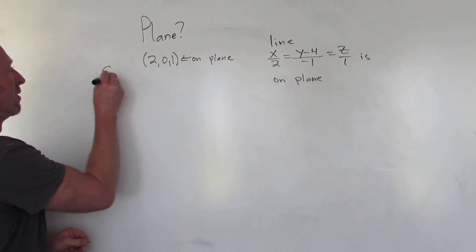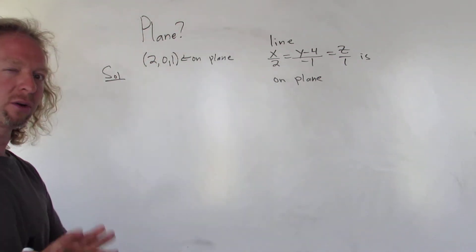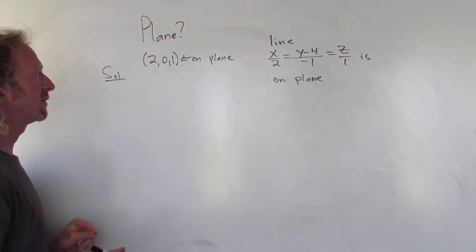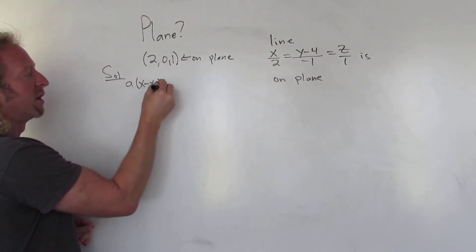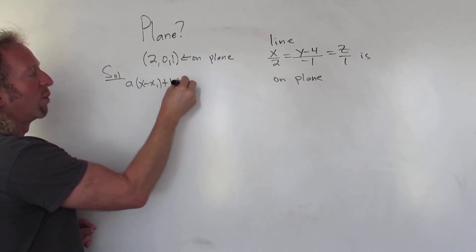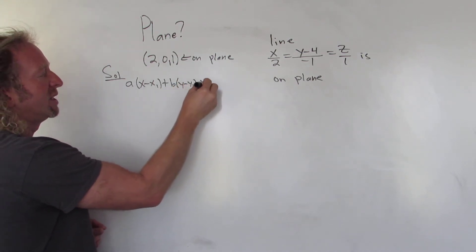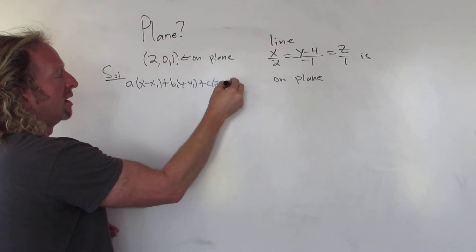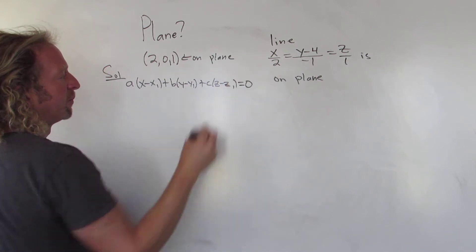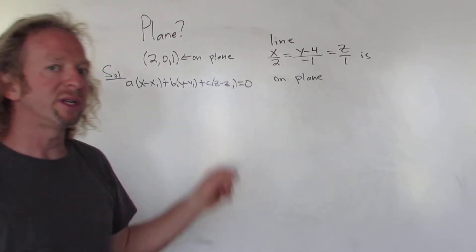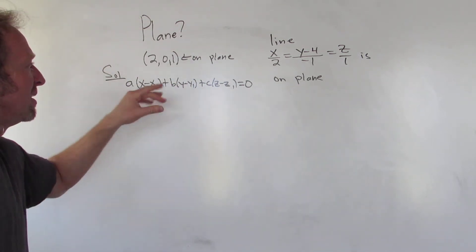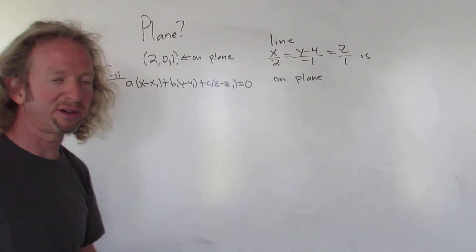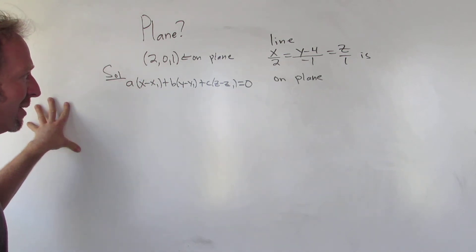So, solution. Before we do anything, I'm going to write down the equation of a plane. The equation of a plane is a(x minus x1) plus b(y minus y1) plus c(z minus z1), and that's equal to 0. x1, y1, z1 is a point on our plane, so we already have that. We can use this one. Then a, b, c is our normal vector, so we need a vector that is normal to our plane.